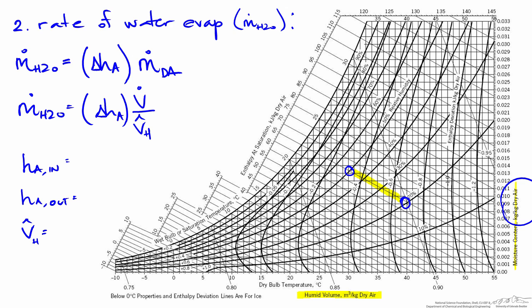We can get the absolute humidity at the inlet by drawing a horizontal line from our initial condition to the y-axis. It's a little bit over 0.013, so I'll use a value of 0.0132.